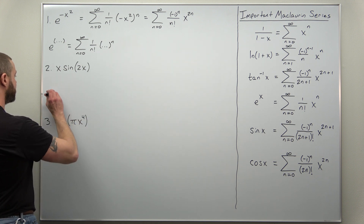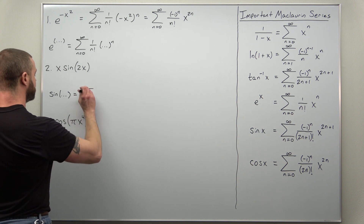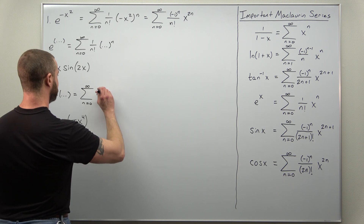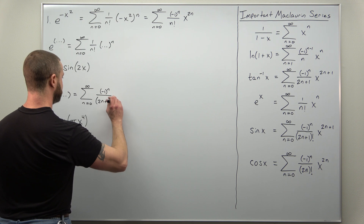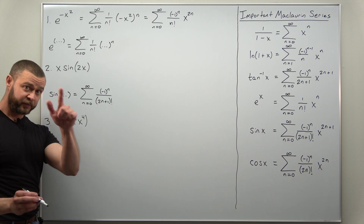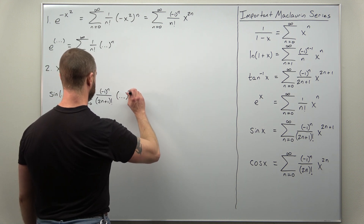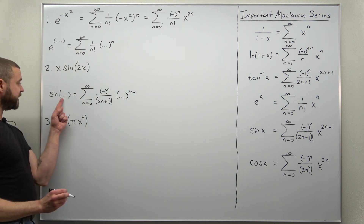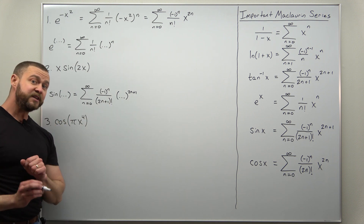Let's start with our Maclaurin series: sine of something equals the sum from n equals zero to infinity of negative one to the nth power divided by two n plus one factorial, with something raised to the 2n plus one power. We just need to make a replacement — inside the parentheses we're going to replace it with 2x.